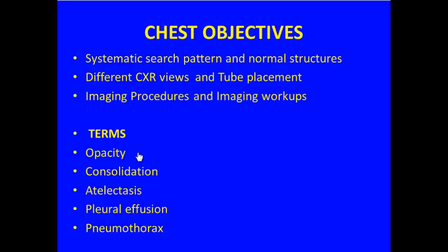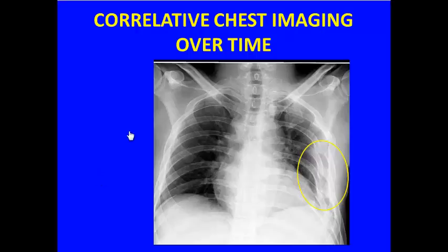We also talked about some typical terms from chest x-ray reports: opacity or density, consolidation — where opacity fills a space of the lung — atelectasis, where there's opacity with volume loss (that volume loss being the key difference between atelectasis and consolidation), pleural effusion out in the pleural space, and pneumothorax, air in the pleural space.